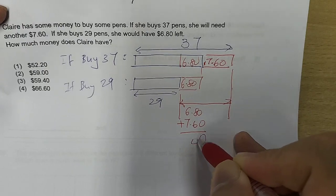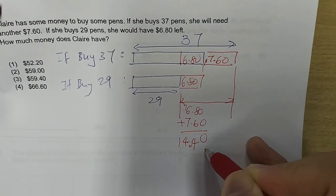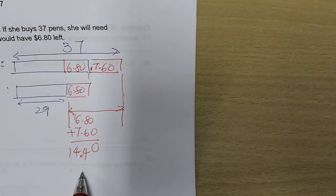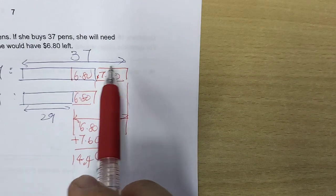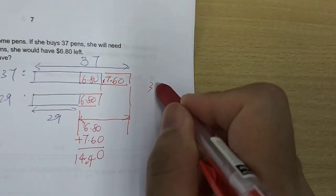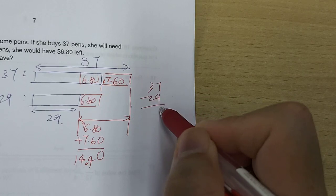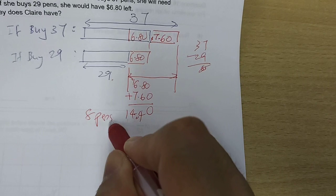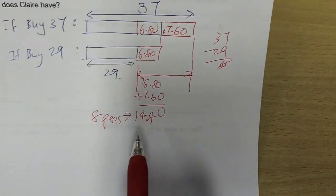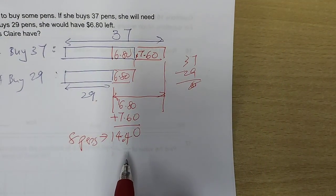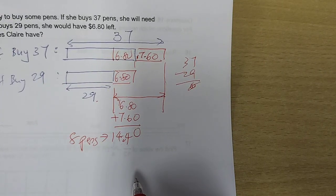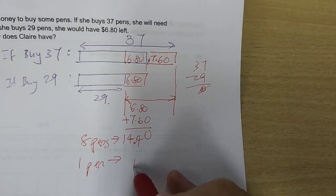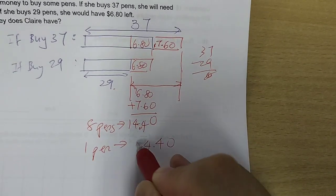Now, what's the usefulness of this value here? The usefulness is to know that here is actually represented by 37 minus 29. That will be 8. 8 what? 8 pens. So, 8 pens actually costs $14.40. Let's find out how much it will cost her to buy 1 pen. To buy 1 pen would be $14.40 divided by 8.